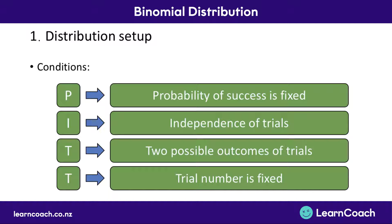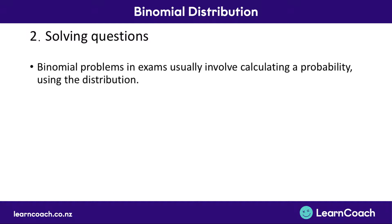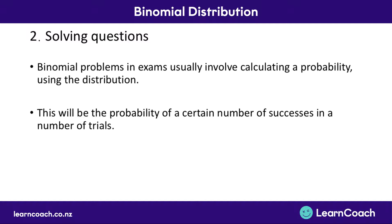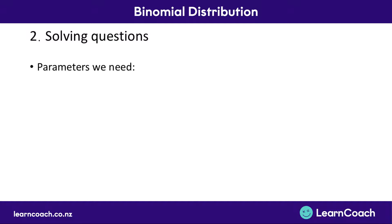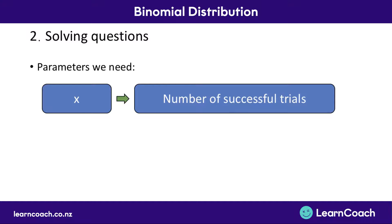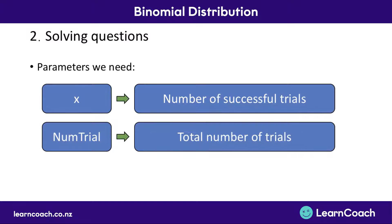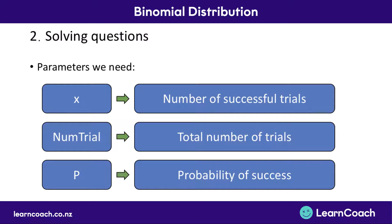Now that we're familiar with the conditions, let's move on to how to actually solve some questions. The binomial problems we get in exams usually involve calculating a probability — the probability of getting a certain number of successes in a certain number of trials. We can get our graphic calculator to do most of the work, but we need to know some parameters for each problem. The first parameter is x, which represents the number of successful trials. The second is numtrial, the total number of trials. The last is p, the probability of success. The names x, numtrial, and p should be exactly what you see on your calculator.